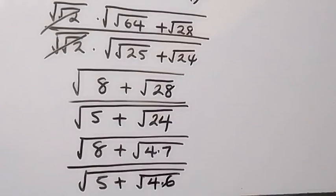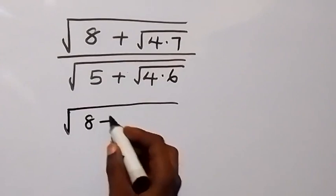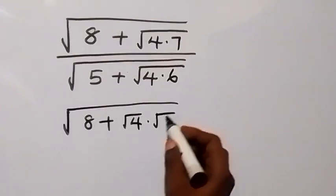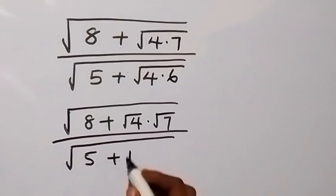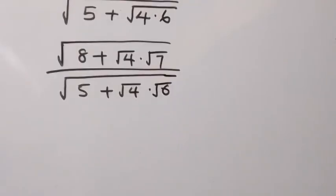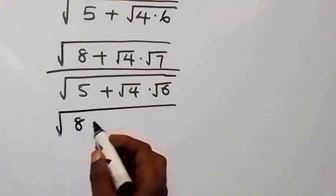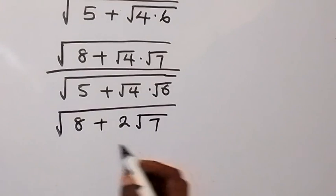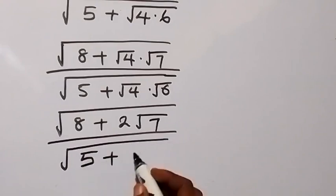From here we can separate this as root 4 times root 7. This becomes square root of 8 plus root 4 times root 7, then over square root of 5 plus root 4 times root 6. Since root 4 equals 2, this becomes square root of 8 plus 2 root 7, then over square root of 5 plus 2 root 6.